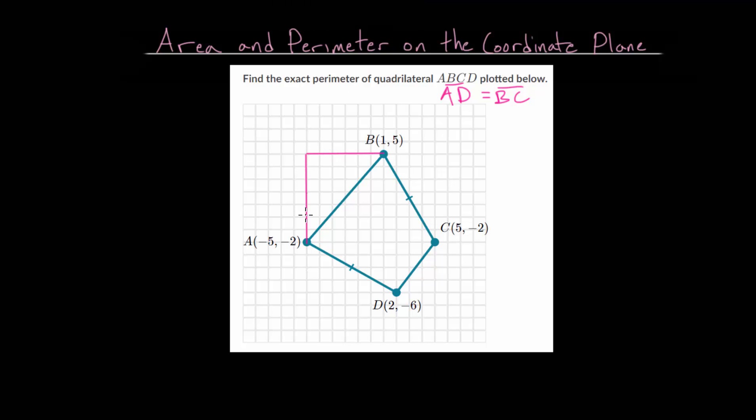We just want to count how long these are. So this is 1, 2, 3, 4, 5, 6, 7. So that has length 7. And this is a right triangle, since these are perpendicular to each other. And this one is 1, 2, 3, 4, 5, 6.